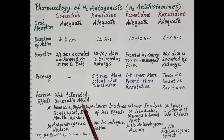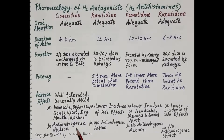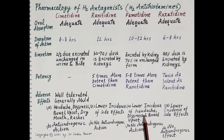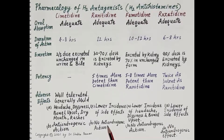Cimetidine is well tolerated by most patients; adverse effects are mild and occur in less than five percent of patients. Effects include headache, dizziness, bowel upset, dry mouth, and rashes. Cimetidine also shows anti-androgenic action; high doses given for long periods can produce gynecomastia, loss of libido, impotence, and a temporary decrease in sperm count. Ranitidine, famotidine, and roxatidine exhibit lower incidence of side effects and do not show anti-androgenic action.